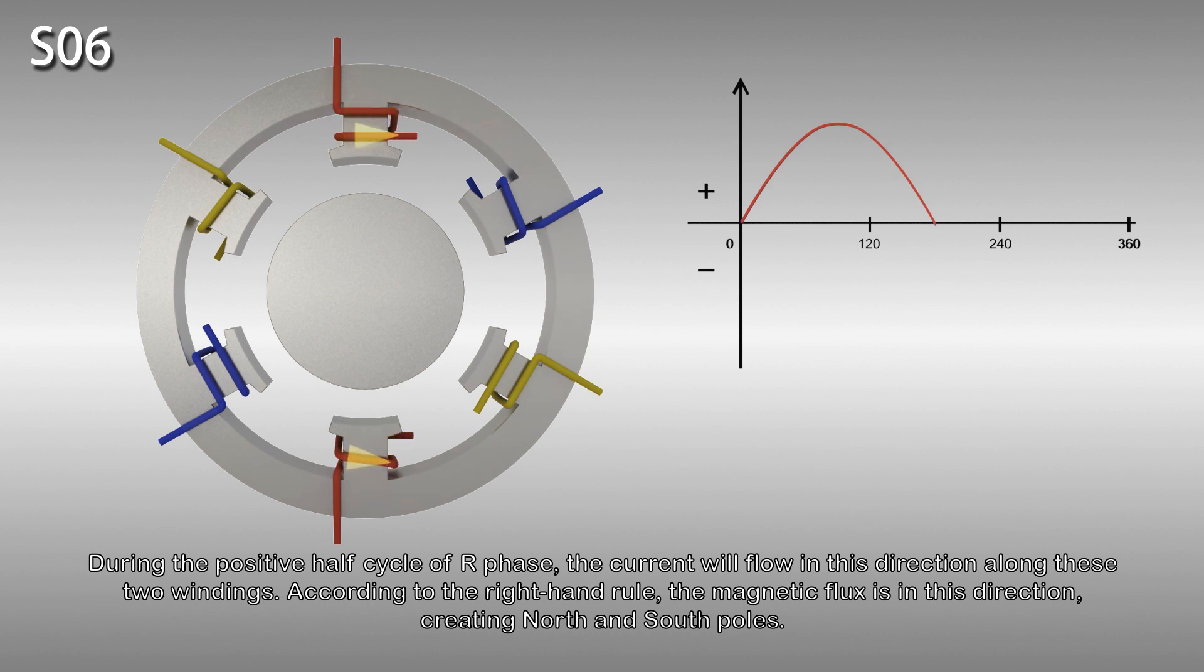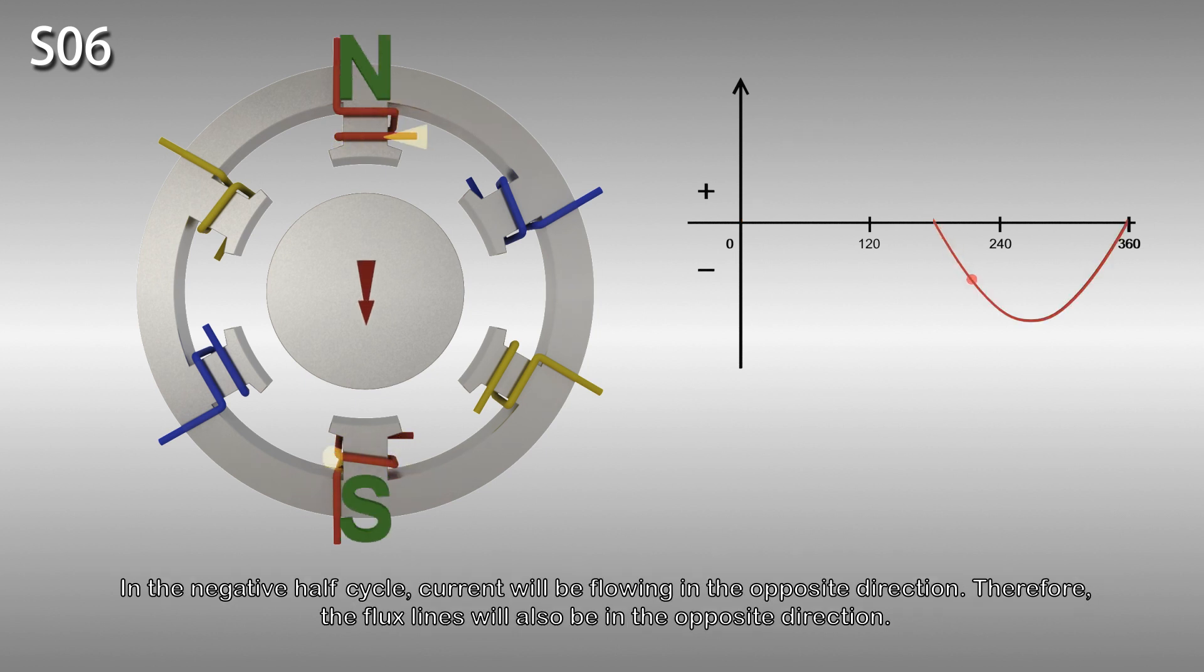During the positive half cycle of the R phase, the current will flow in this direction along these two windings. According to the right-hand rule, the magnetic flux is in the direction shown creating north and south poles. In the negative half cycle, current will be flowing in the opposite direction. Therefore, the flux lines will also be in the opposite direction.